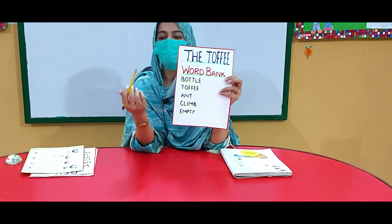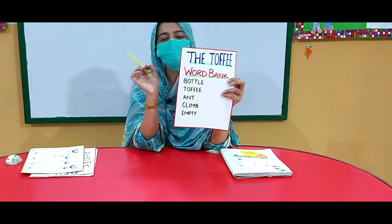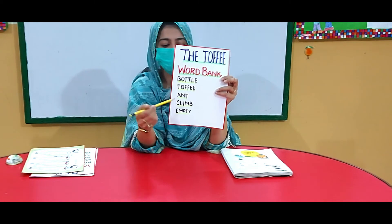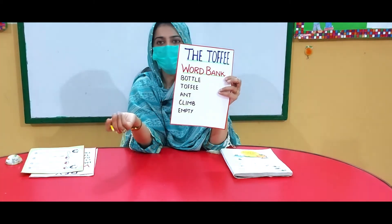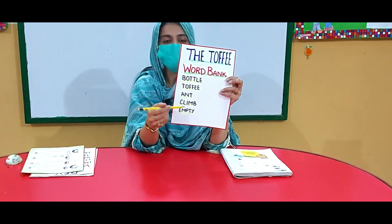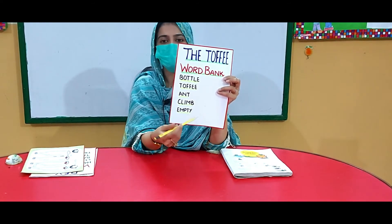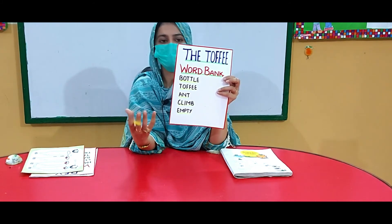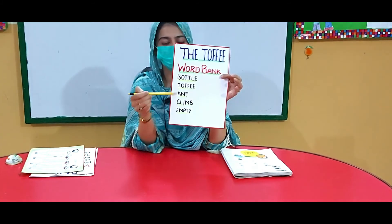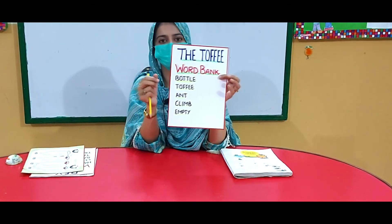Here are some sentence examples. For 'bottle': I have a bottle, the bottle is red, the bottle is big. For 'toffee': I like toffee, my brother has a toffee. For 'ant': I saw an ant today. For 'climb': my brother climbed the tree. For 'empty': the jar is empty, the mug is empty. First task is reading, second task is memorizing the words, third task is making sentences.